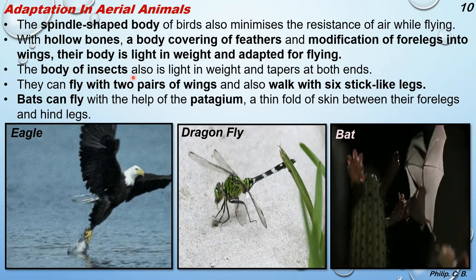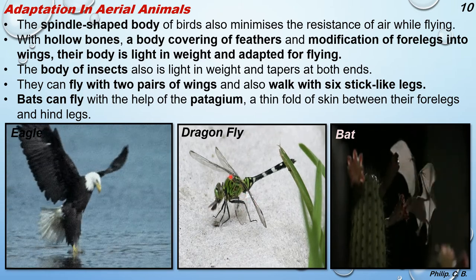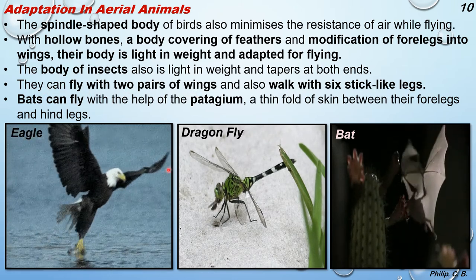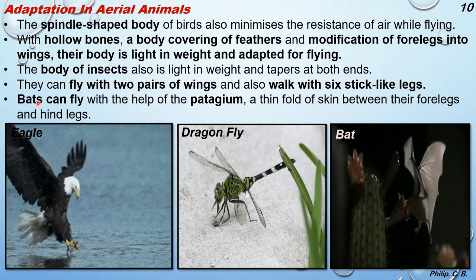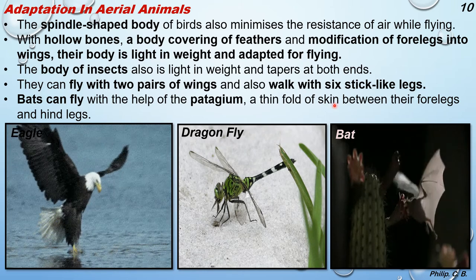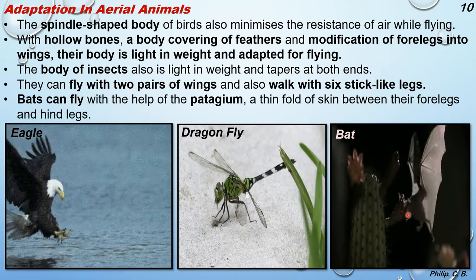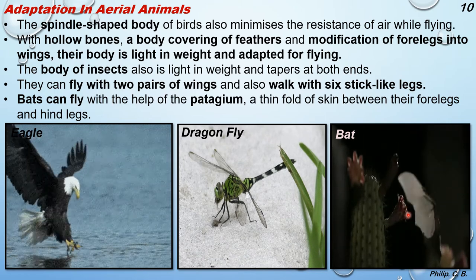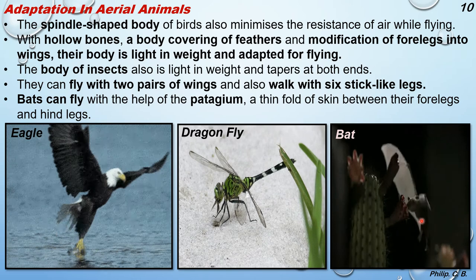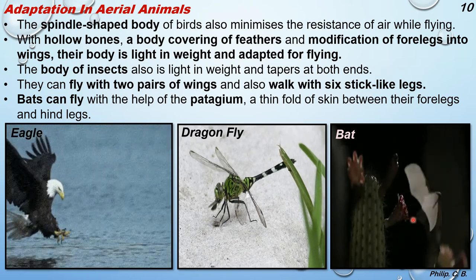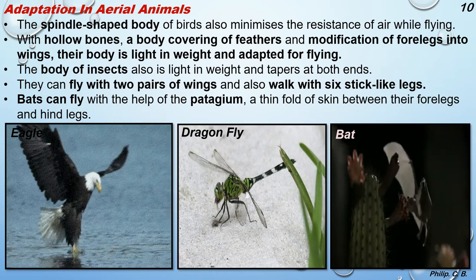The body of insects is also light in weight and tapers at both ends. For example, the dragonfly can fly with two pairs of wings - which you can see clearly here - and can also walk with six stick-like legs. Bats can fly with the help of the patagium, a thin fold of skin between their forelimbs and hind limbs. You can see an animation of a bat coming towards a plant and having pollen grains from a flower, a dragonfly, and an eagle catching fish in the ocean.